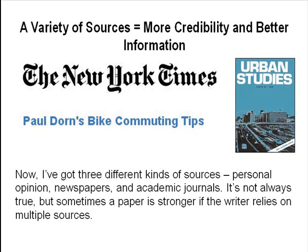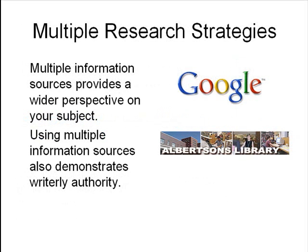Now I've got three different kinds of sources: personal opinion, newspapers, and academic journals. It's not always true, but sometimes the paper is stronger if the writer relies on multiple sources. The information you find in the virtual library, combined with the information you got from your Google search, gives you a new perspective on your topic. As a writer, you have a lot more authority because you demonstrate that you're able to use different kinds of information and to look for that information in different ways.